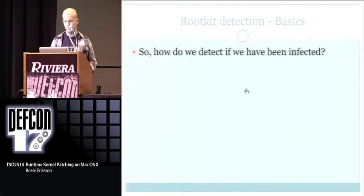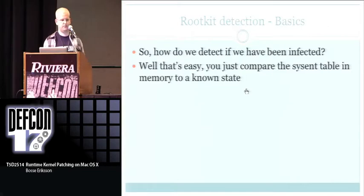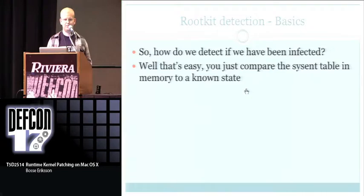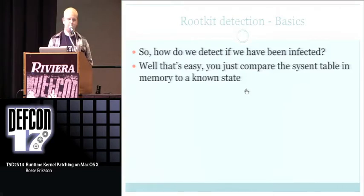Detection. How do you detect these things if you've been infected? It turns out it's pretty easy — you just compare the sysentry table in memory to a known state. But everyone knows that's not always reliable, because there are a million ways to bypass this comparison. Any serious attacker would bypass it. But I'm going to show it anyway because it does work.